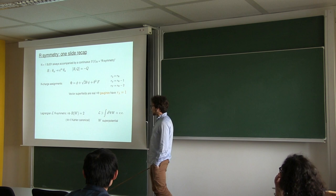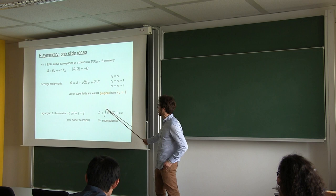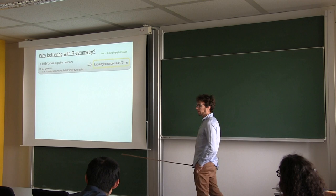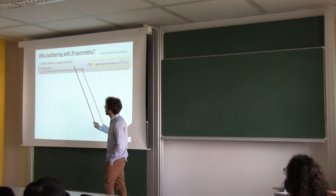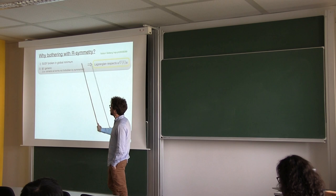Then, if we demand the Lagrangian to be R-symmetric, this implies that the superpotential needs to have R-charge 2, unlike with any other symmetry. The reason is, this is the way you get the Lagrangian, you have two insertions of the Grassmann variable that transform under R. Then, this is what R-symmetries are, so why you should bother.